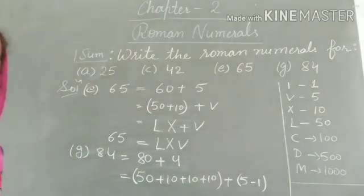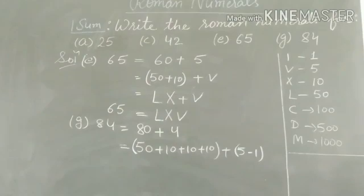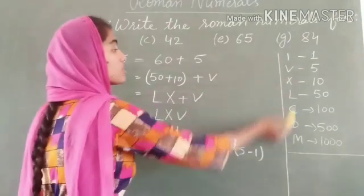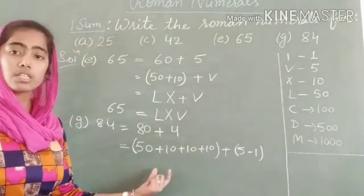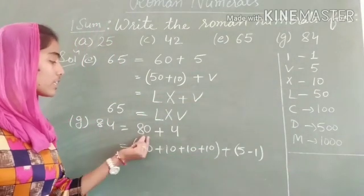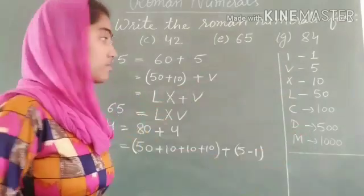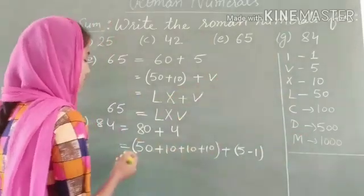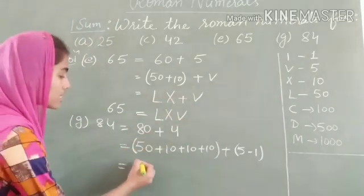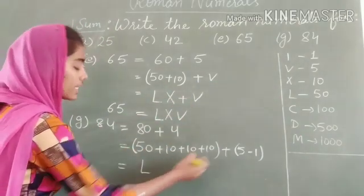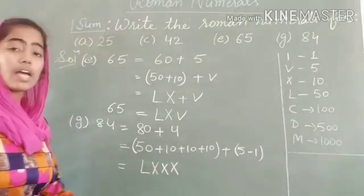can be written as 5 - 1. We will try to use only the symbols available in these seven digits. I will arrange these numbers so I can use these symbols. For 50, I will write L. And for 10, 10, 10, I will use X, X, X three times.